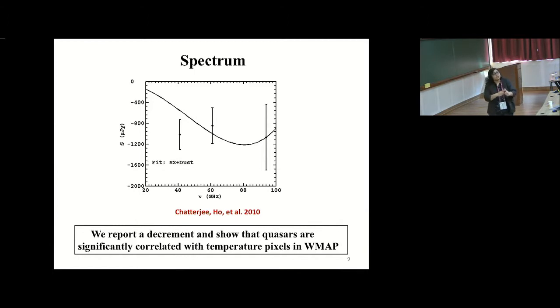There were two things that came out from that analysis. First, there was a decrement. Second, when we randomized the position of the quasars in the sky and reanalyzed for many, many random realizations, we could not find it, it was totally a null result. Somehow, we reported a decrement and showed that quasars were correlated with the temperature pixels in WMAP. Is it SZ effect? We don't know. The title of the paper was tentative detection.